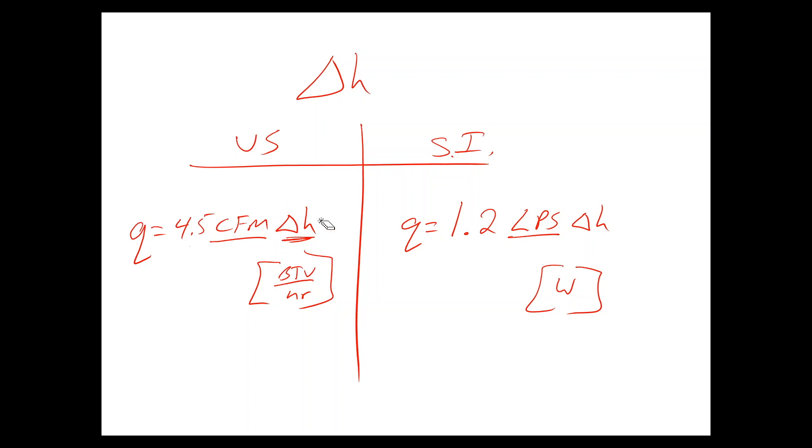So, in the U.S., we have CFM cubic feet per minute times 4.5 times the delta H. We get that from the psych chart, okay. And, in the International, same thing. We get the delta H from the psych chart. And, we can plug it right into this equation for Q. Hopefully, this helps you understand heat transfer and how the psych chart factors into that process. Catch you next time.